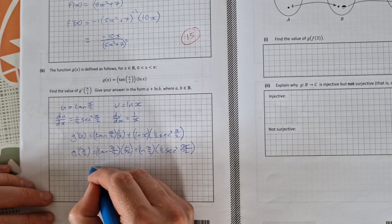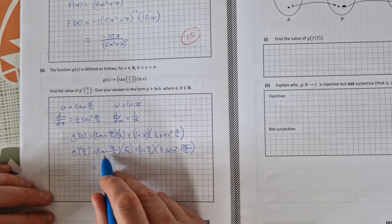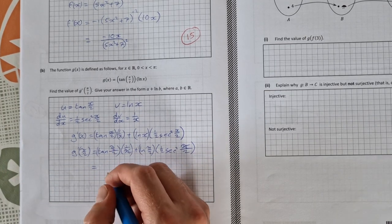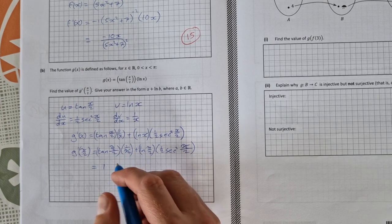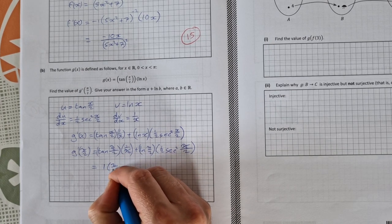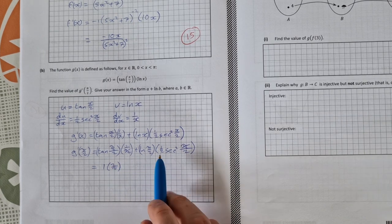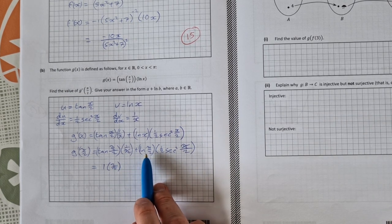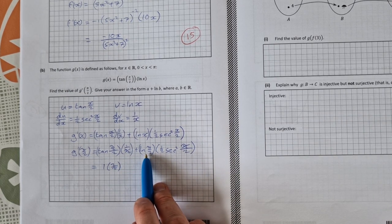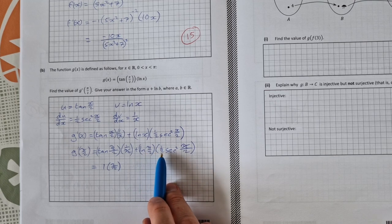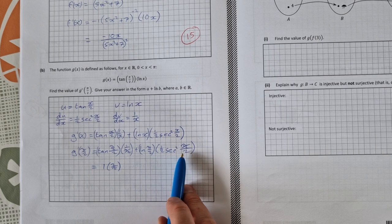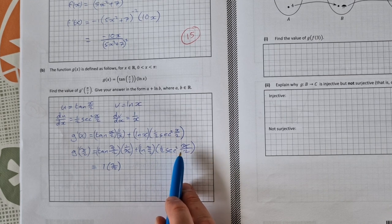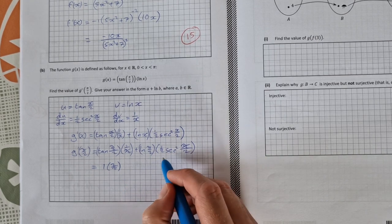And then that simplifies down to give us tan of π over 4 is 1. And 1 over π over 2 is 2 over π. So that simplifies down nicely. And then the natural log of π over 2 we can leave like that for a moment. Half secant squared π over 4 simplifies down to a half times 2 which is just 1.